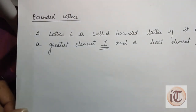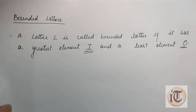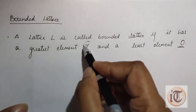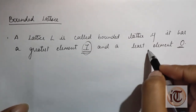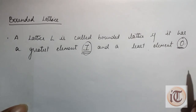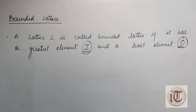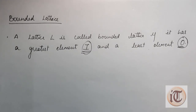A lattice L is called a bounded lattice if it has a greatest element, represented by i, and a least element, represented by 0 or o. So in every bounded lattice we have a greatest element and a least element. The greatest element is represented by i and the least element is represented by o.